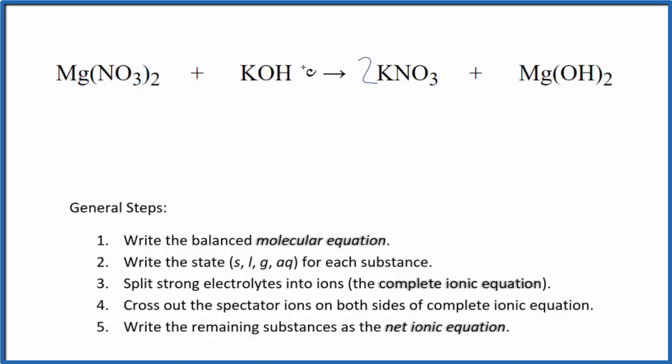Now I have two potassiums and only one, so I'll put a 2 here. That's nice because now I have two hydroxides and two over here. Those are balanced, one magnesium, one magnesium. So this is the balanced molecular equation.